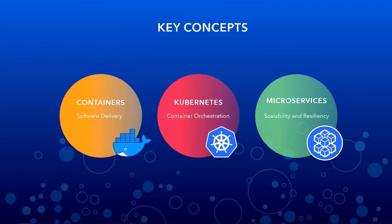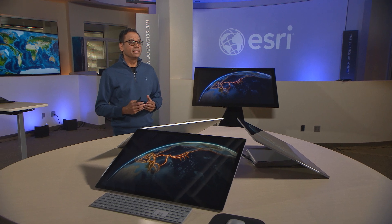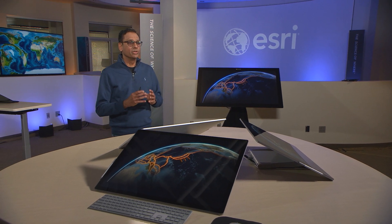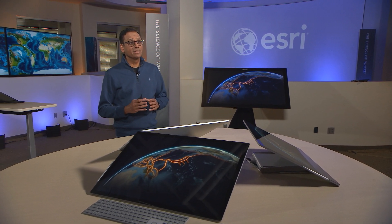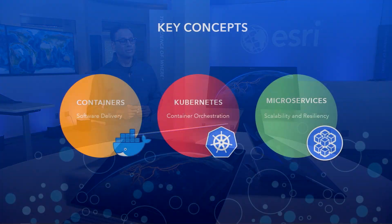There are three key concepts I want to introduce to you at this time about this offering. The first one is how we deliver the software itself. It's packaged as Docker containers made available via a Docker registry. These containers are very self-reliant — they are autonomous units that help with fast and consistent deployments and easy maintenance too.